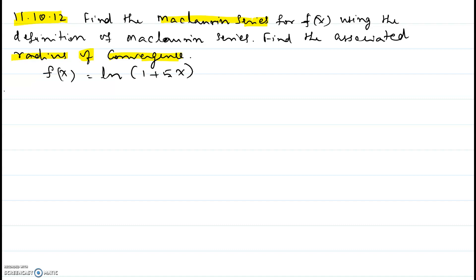Hi, in this video I will be showing you problem number 12 of chapter 11, section 10. Find the Maclaurin series for f of x using the definition of Maclaurin series. Find the associated radius of convergence. f of x equals ln of 1 plus 5x.